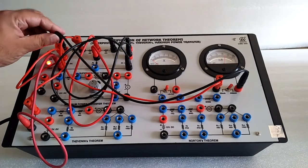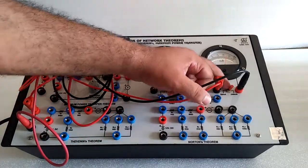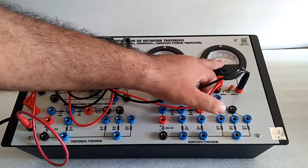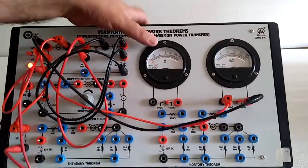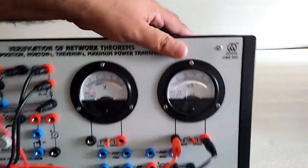Now, superposition column as we have as the circuit, note down the current that is I1 current here.